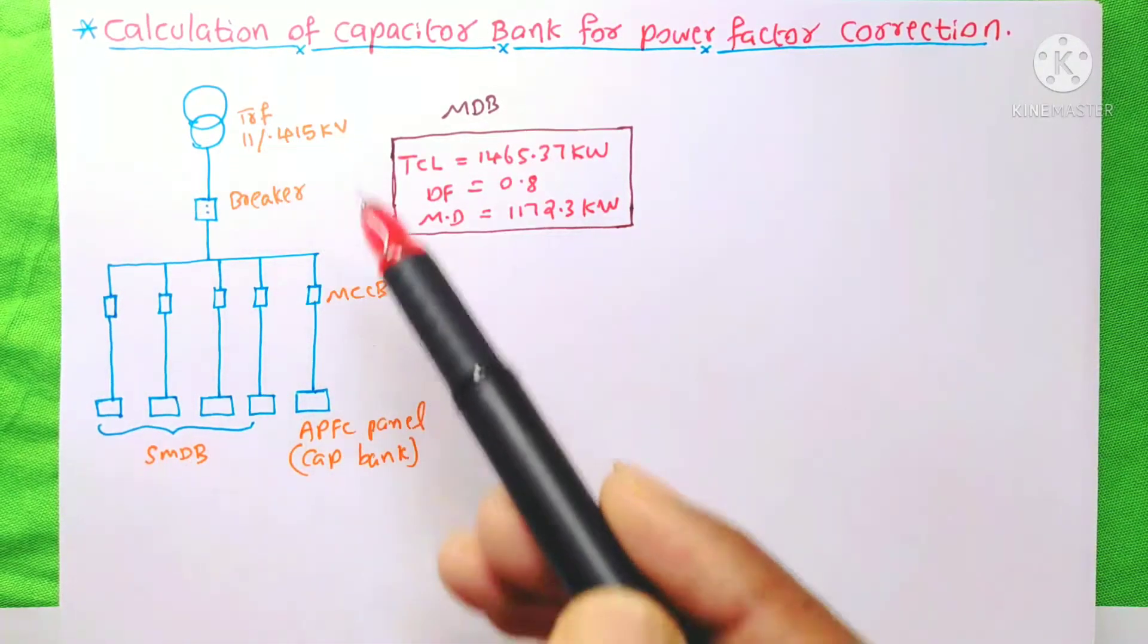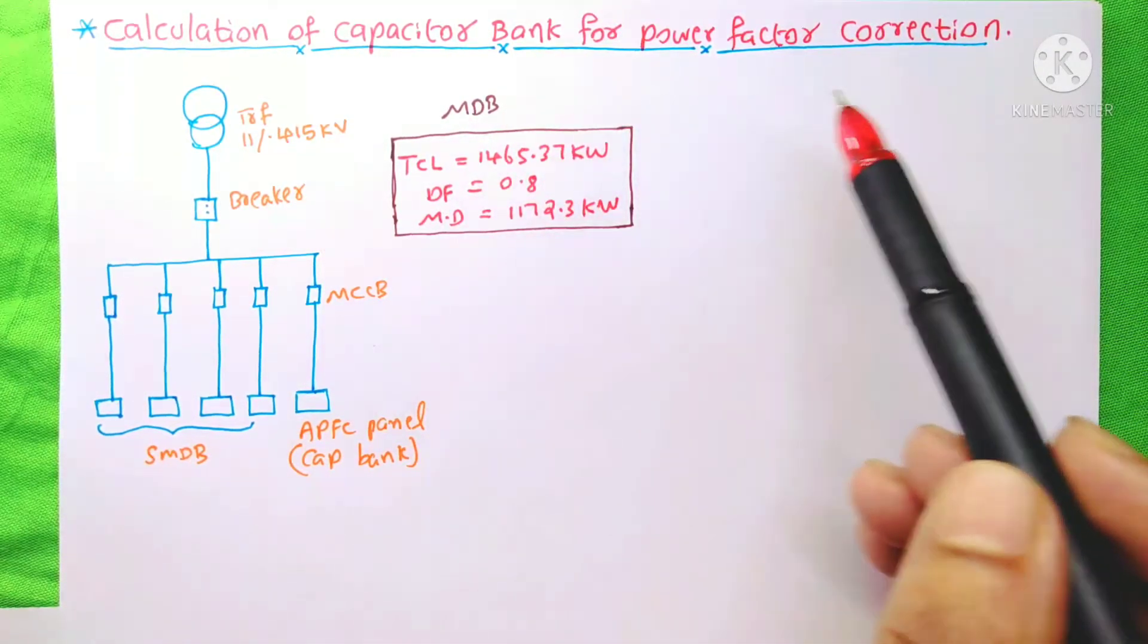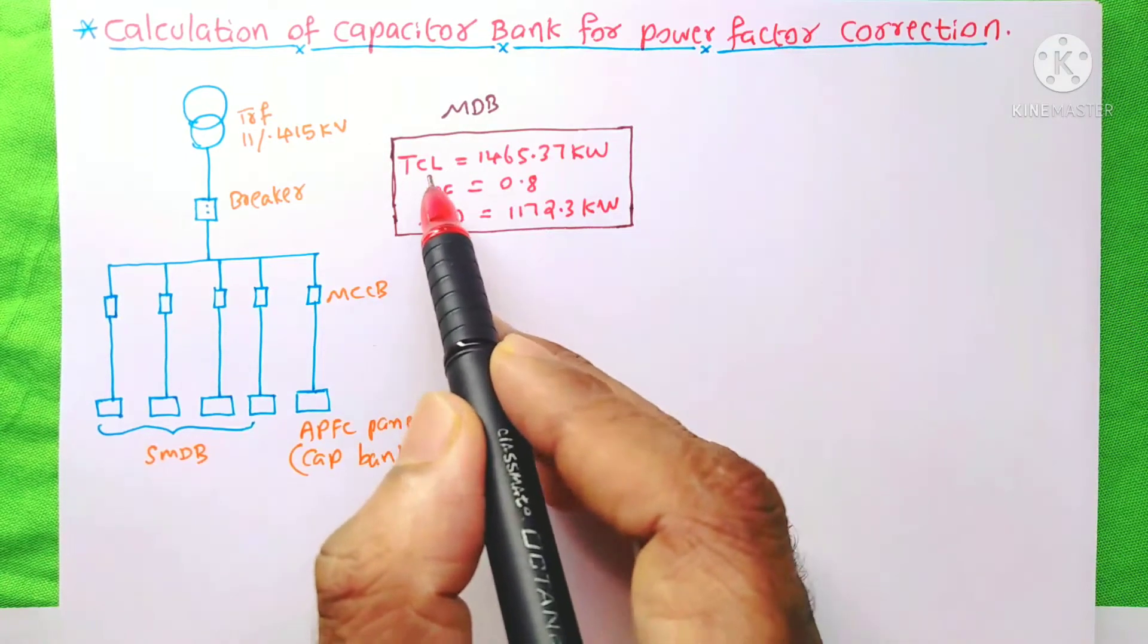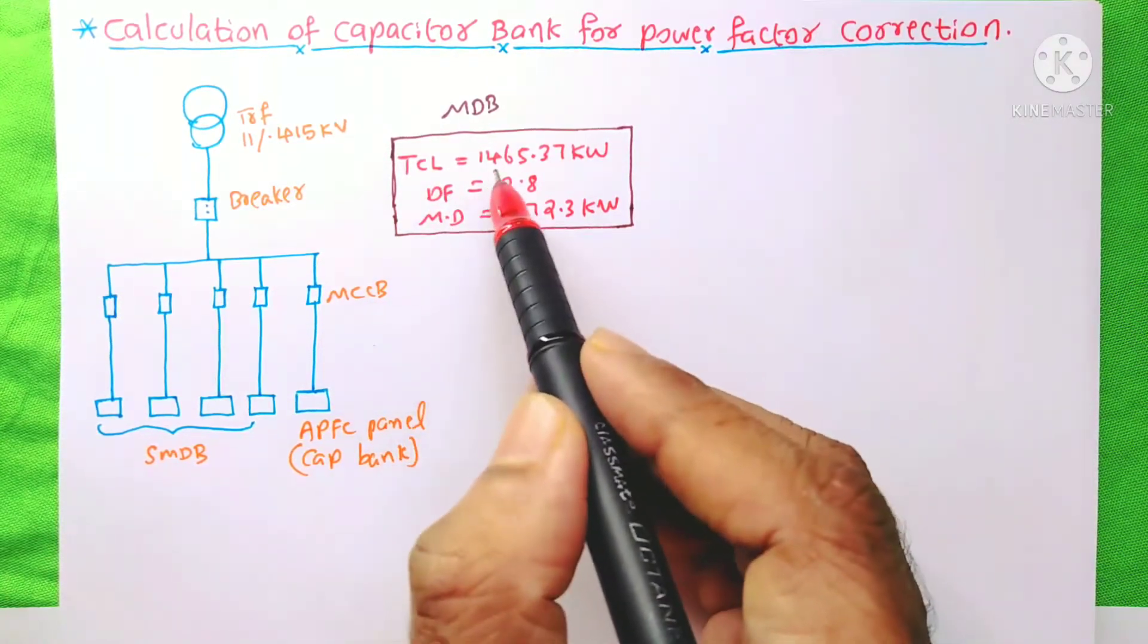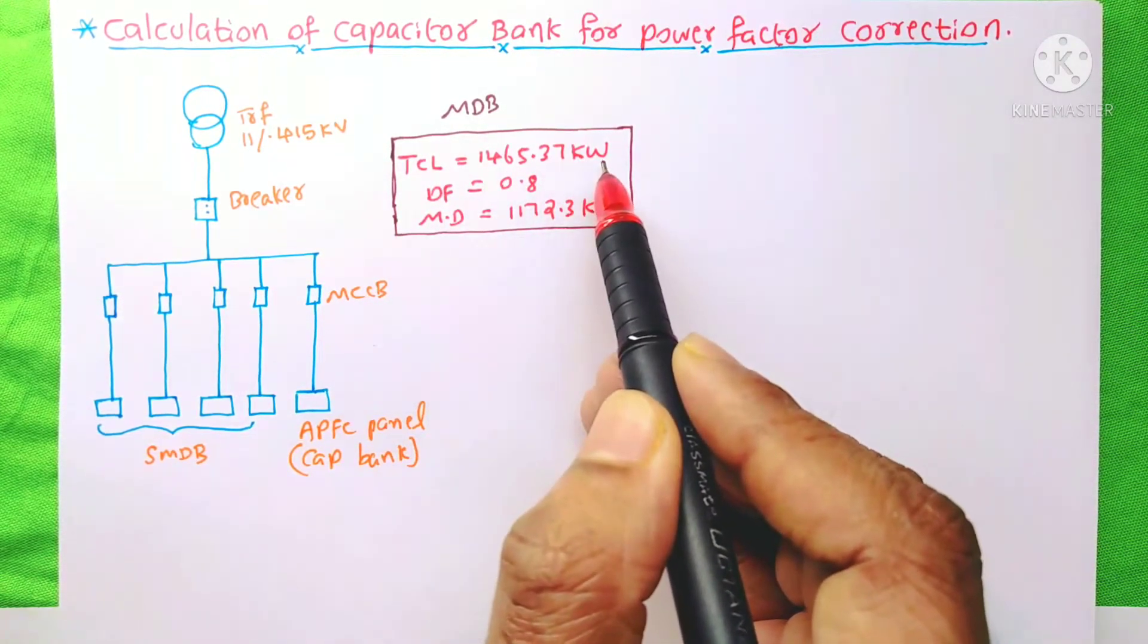How to do the calculation of capacitor bank for power factor correction. Here we have a total connected load of 1465.37 kW.